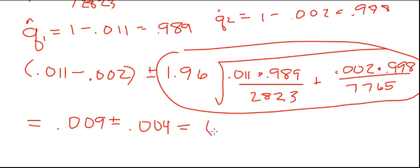And so every confidence interval has a lower bound. So if you take 0.009 minus 0.004, you get 0.005. And then you add the two, so 0.013. Okay, so there's the confidence interval. Let me show you how to do it on a calculator.